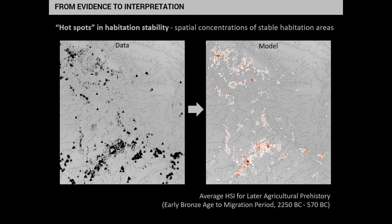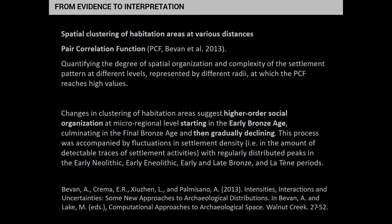Here you can see the original data — scattered evidence — and here you can see those hotspots of settlement activity in the landscape. The second result we were able to achieve was to finally observe the spatial patterns: how did the settlement behave and develop over time? We used a pair correlation function, which is a function to express the spatial clustering of data, to analyze the different solutions and quantify the degree of spatial organization. We can tell whether the settlement clusters at different radii or size levels.